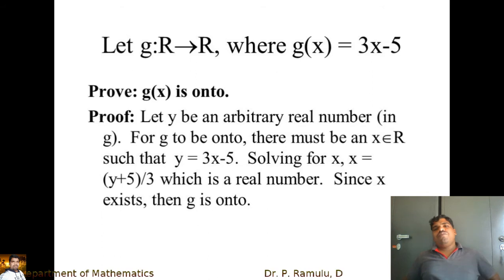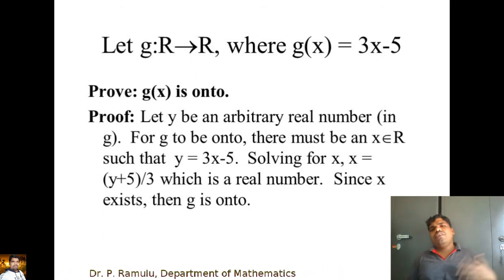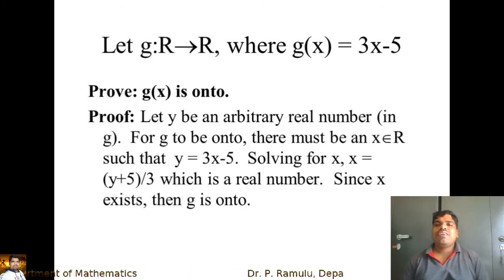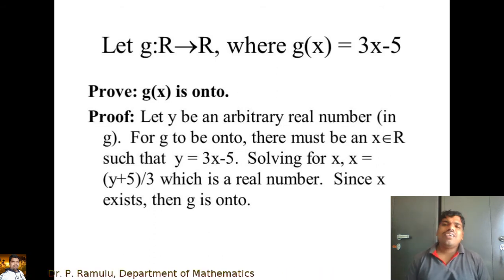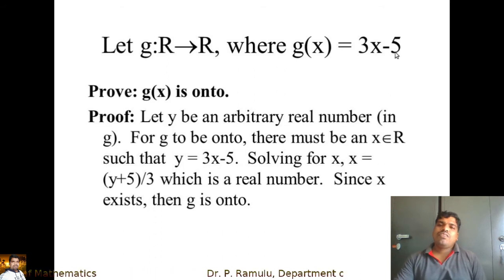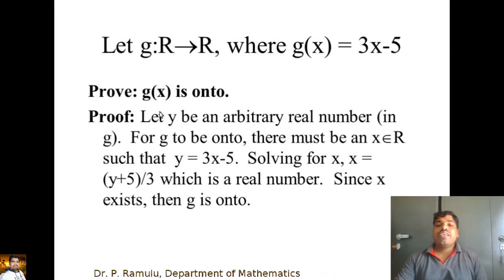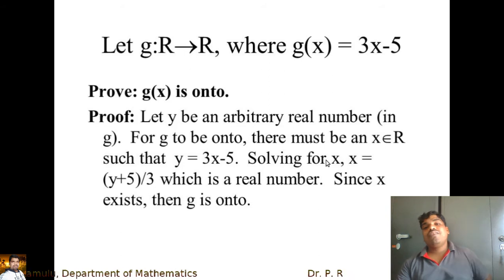Example: g: ℝ → ℝ where g(x) = 3x − 5. Using the same approach, set y = 3x − 5. Solving for x gives x = (y + 5)/3. For any element in the codomain, we have a pre-image x = (y + 5)/3. Therefore, this function is also onto.